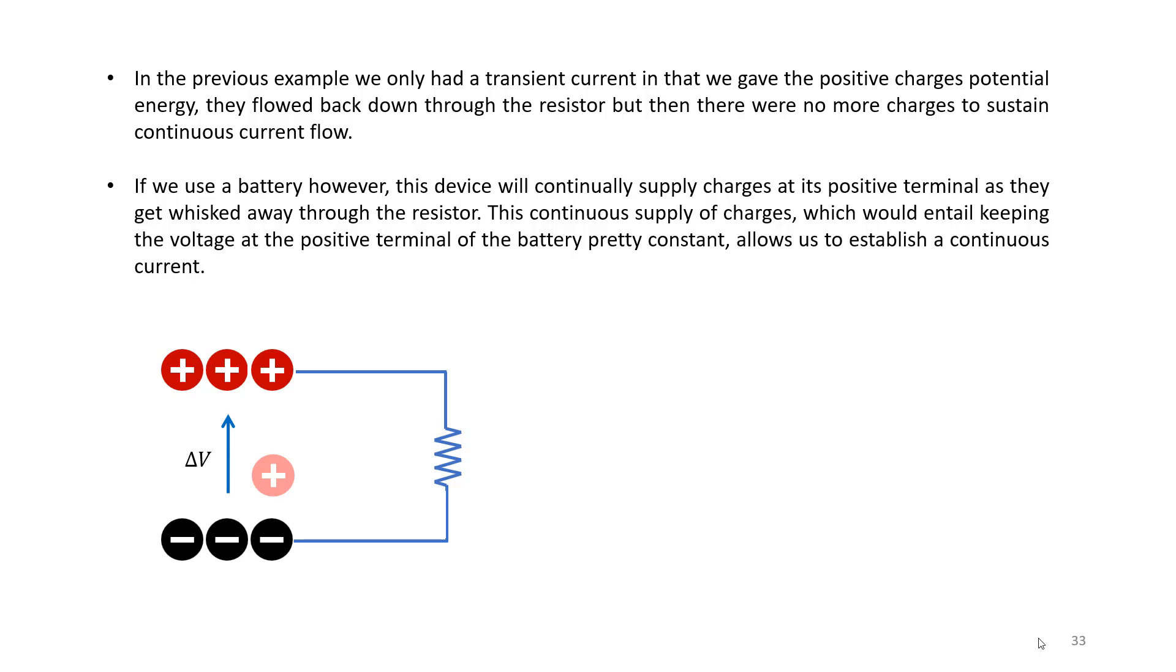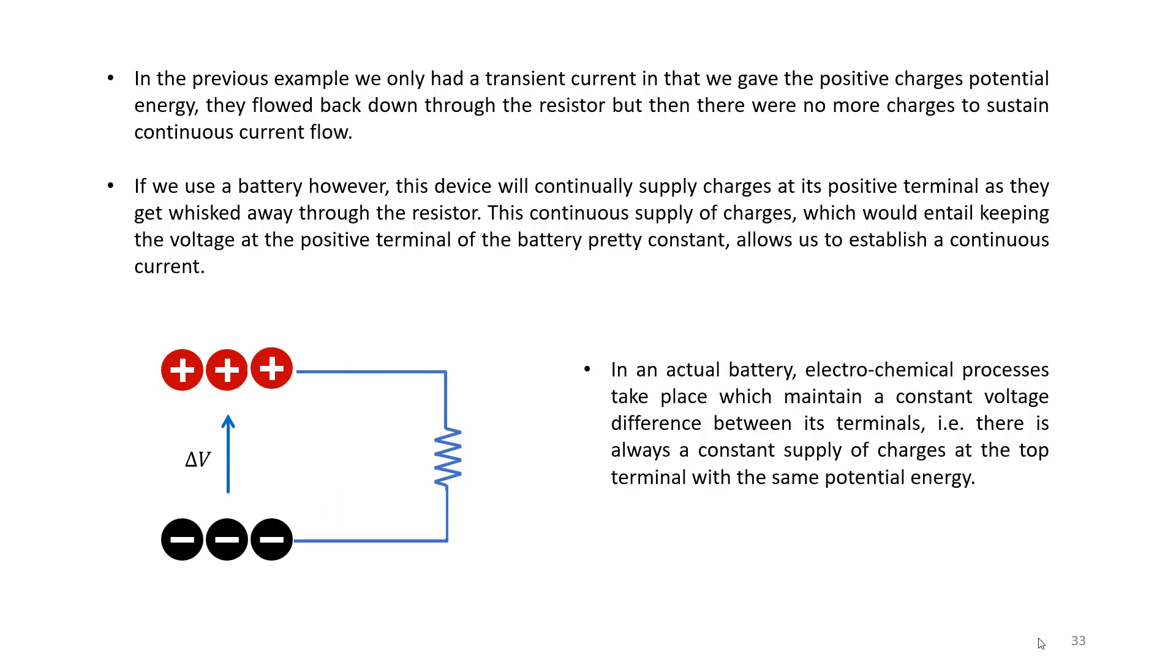However, if we used a battery, and this is a device which will continually supply charges at its positive terminal so as to maintain this delta V, this would allow us to establish a constant current flow. This is shown in this animation here, where charges will flow through the circuit but the battery will continue through electrochemical internal processes to maintain a constant potential difference between its terminals, and hence allow a constant supply of charges and a constant current to flow through the resistor.